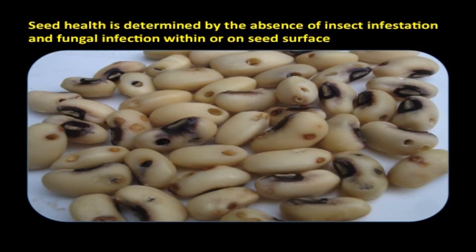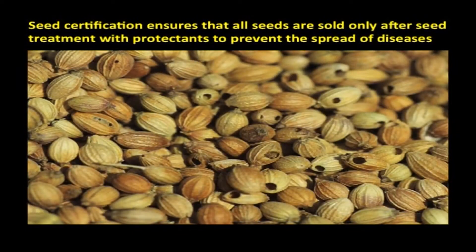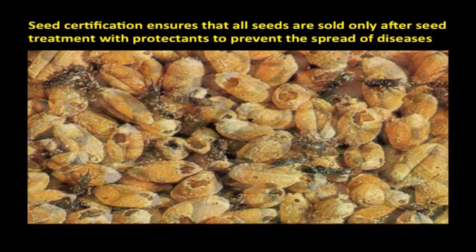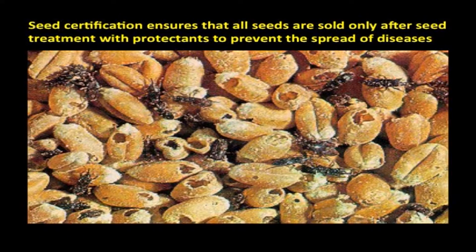The fourth most important quality is seed health, determined by the absence of insect infestation and fungal infection within or on the seed surface. In today's world, diseases spread faster because seeds from one country are brought by seed companies and sown in India, so pests and diseases from that country can spread into India. Seed certification therefore monitors seed health in the field, in storage, and during import or export to prevent the spread of diseases. To ensure control of disease and pest spread, seed certification ensures that all seeds are sold only after seed treatment with protectants.